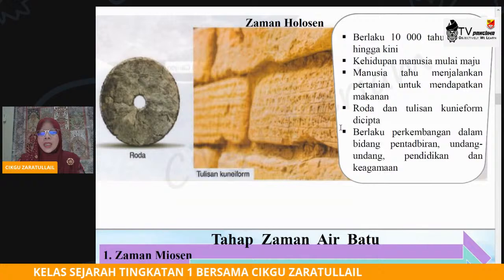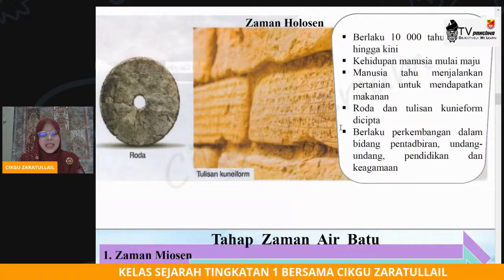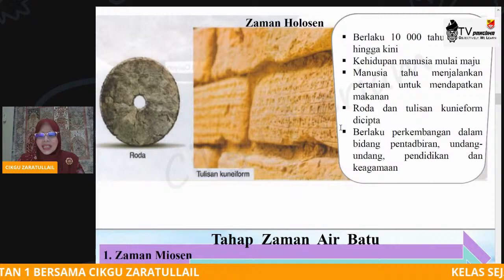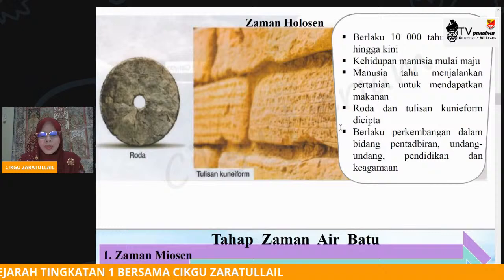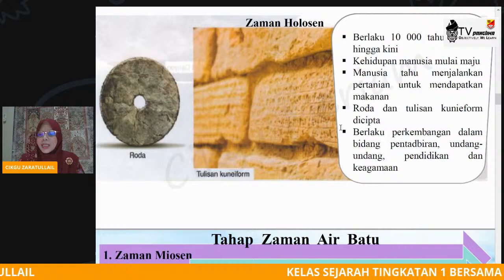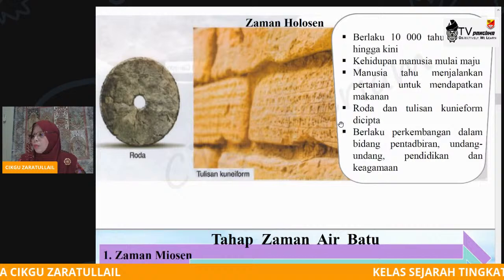Tetapi pada zaman Holosen ini, kehidupan mereka sudah mula tersusun. Mereka sudah pandai menjalankan kerja-kerja pertanian. Tidaklah aktiviti pertanian seperti pada hari ini dengan alat-alat yang khas. Mungkin pada ketika itu mereka sekadar menanam tumbuh-tumbuhan, buat lubang, tanam, kemudian mengharapkan bantuan air hujan ataupun air sungai untuk menyiram tanaman. Walau bagaimanapun berbanding dengan 3 zaman sebelumnya, zaman ini lebih maju.